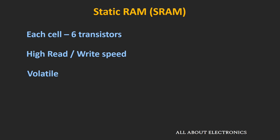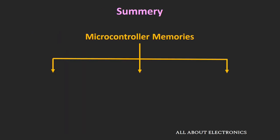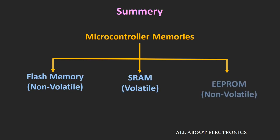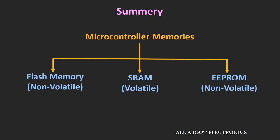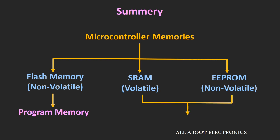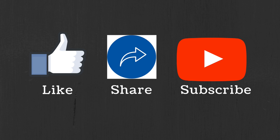This is all about the different types of memory inside the microcontroller. In summary, there are three types of memory: flash memory, SRAM, and EEPROM. Flash memory is used as program memory, while SRAM and EEPROM are used as data memory. I hope you understood about the different types of memory inside the microcontroller. If you have any questions or suggestions, please let me know in the comment section below. If you liked this video, hit the like button and subscribe to the channel for more such videos.